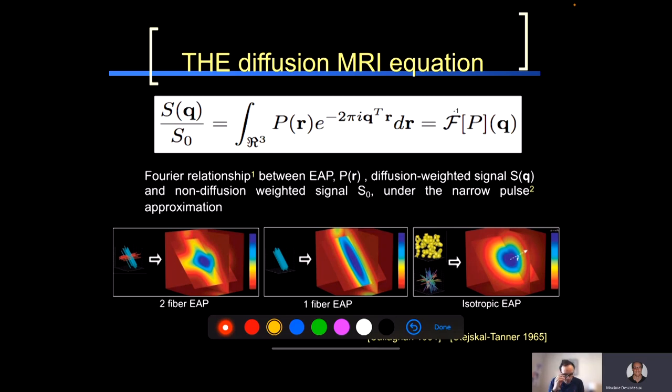So this is the only critical equation linking the signal S of Q and S0, this is the B equals zero image, with our object P of R, which is our diffusion propagator. For the physicists out there or engineers, you see it's related via Fourier transform. So we measure in Q space. Q space is actually in millimeters inverse, so we're measuring in frequency space, and the object that we're interested in, the P of R, is in millimeter. It's in real space. P of R is really in the space of axons and at the scale at which we want to reconstruct features of the white matter neuroanatomy.